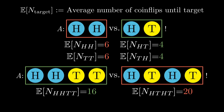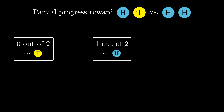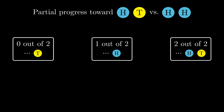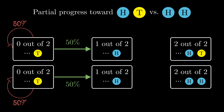Before we jump into the calculation, let's first develop some intuition. The key is to look at the partial progress towards the target sequence. For heads-tails you either have no progress — for example when the last flip was tails — or you are halfway towards heads-tails when the last flip was heads, or you have finally reached heads-tails. Heads-heads has completely analogous states. Starting from no progress, you have a 50% chance to flip heads and move to the 1-out-of-2 progress state, and a 50% chance to flip tails and stay at 0-out-of-2. This is identical for both sequences.